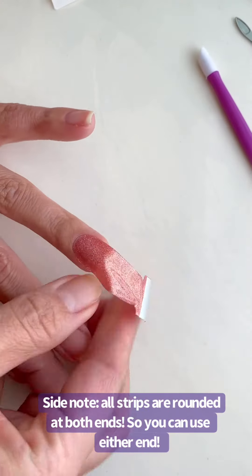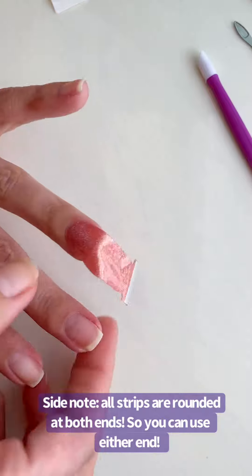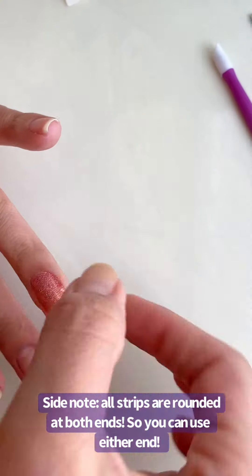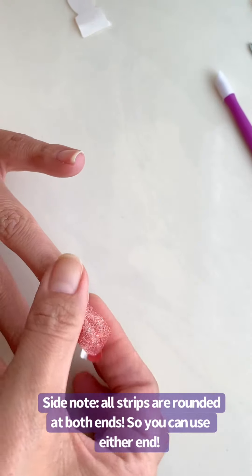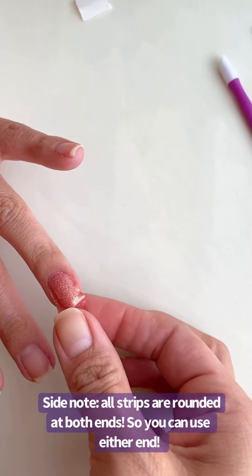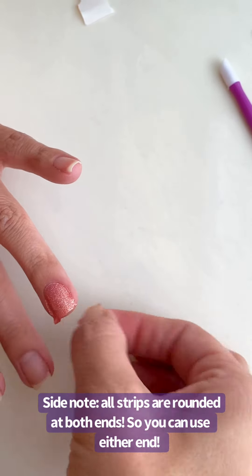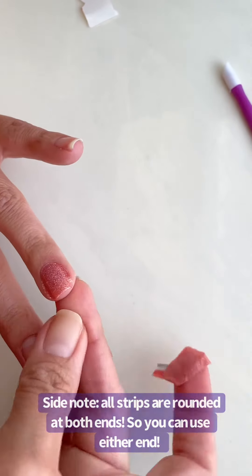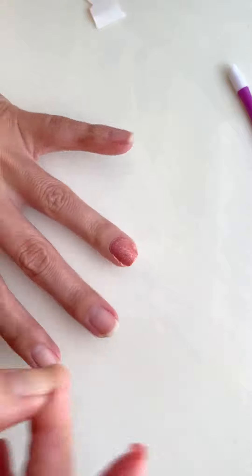So notice how here I put the rounded end at the cuticle line and then I'm going to rub down. This is how I always apply. Rub down, go over the nail bed, use my other thumb to kind of scissor off any excess and then I usually will kind of push anything left over underneath.